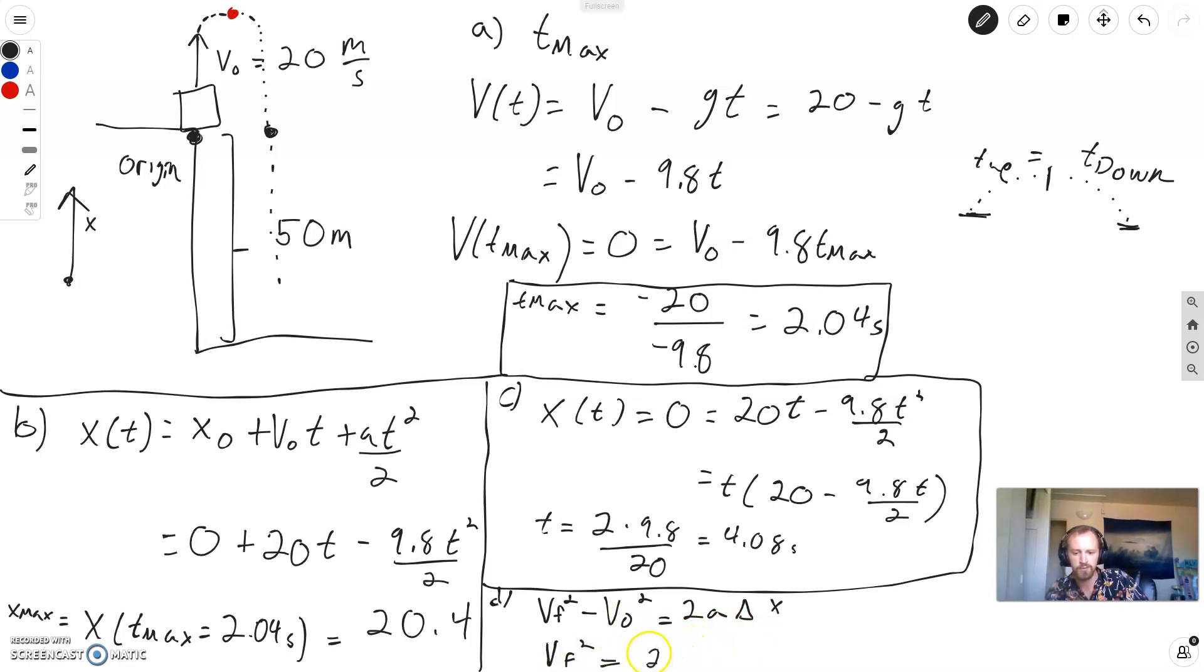So, I can say my Vf squared equals 20 squared, my initial velocity, plus 2 times negative 9.8. That's my acceleration. And, then my delta x is my final position, which is negative 50, minus my initial position, which is 0. So, go through with this equation, taking the square root, you will get Vf equals, so I get 20 squared, plus 2 times 9.8 times 50. And, then I take the square root of that, and I get 37.1 meters per second.